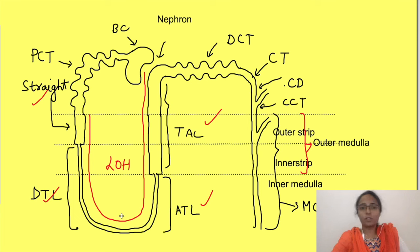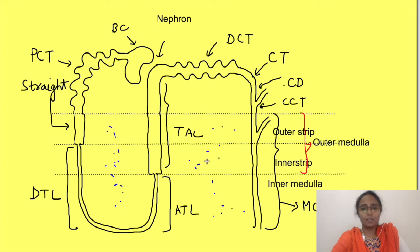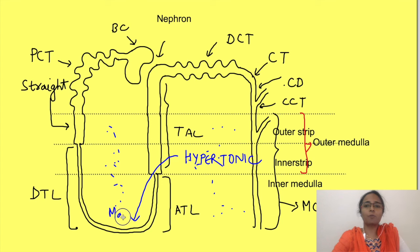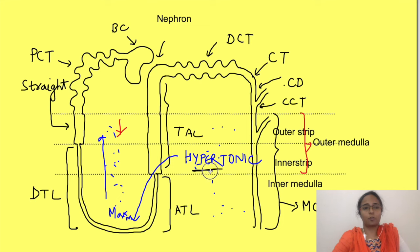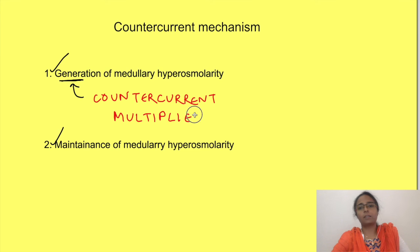Kidneys need to excrete concentrated or dilute urine depending on the hydration status of the body. The concentration or dilution of urine depends on the presence of a gradient of hyperosmolarity in the medullary interstitium — with maximum hypertonicity at the tip of the medulla, decreasing towards the outer medulla. The basic function of counter-current mechanism is to make the medullary interstitium hypertonic. There are two aspects: generation of hypertonic gradient and maintenance of hypertonic gradient. Generation occurs by the counter-current multiplier and maintenance is done by the counter-current exchanger.